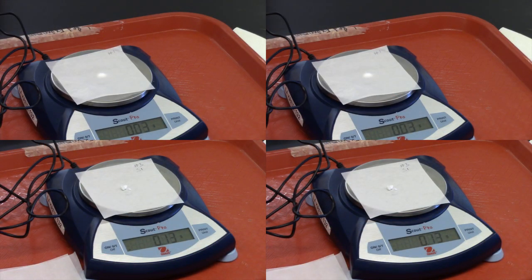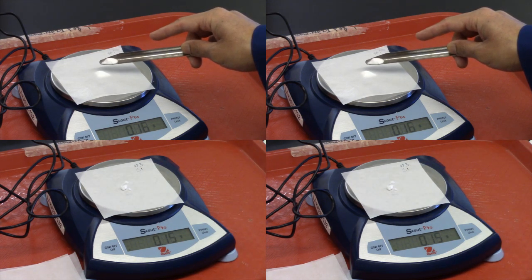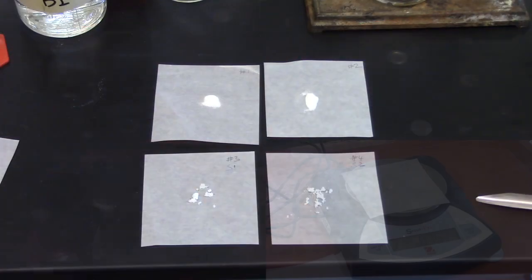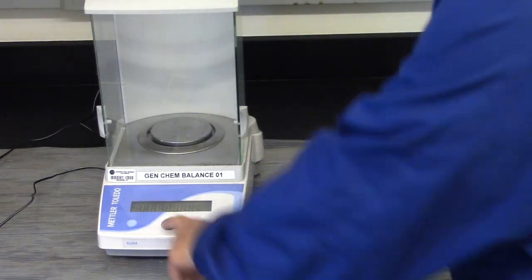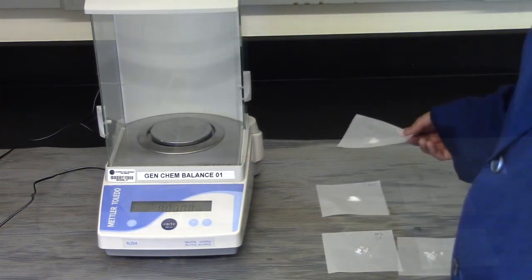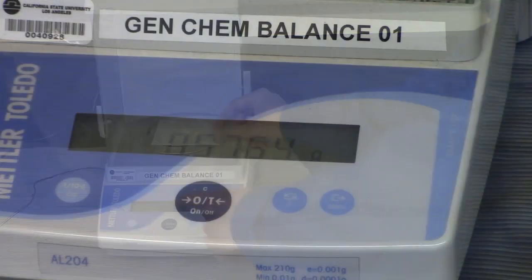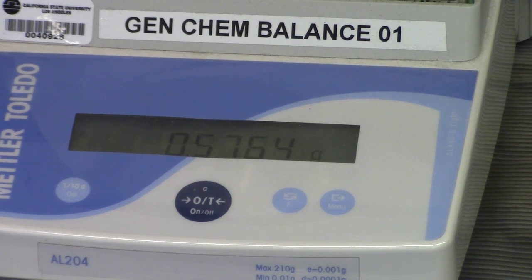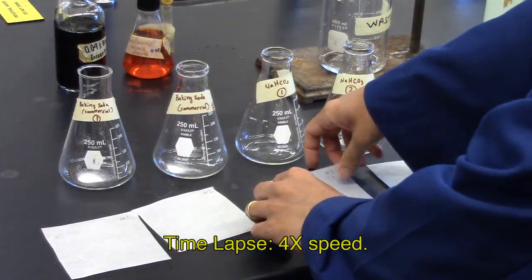Using the centigram balance and its tare function, weigh out on the labeled weighing papers two 0.2 gram samples of the commercial sodium hydrogen carbonate and two 0.2 gram samples of the synthesized sodium hydrogen carbonate. Return to the same analytical balance to reduce systematic errors. Weigh the four samples of weighing paper plus sodium hydrogen carbonate. Record the masses. Transfer each sodium hydrogen carbonate to the appropriate labeled flask.